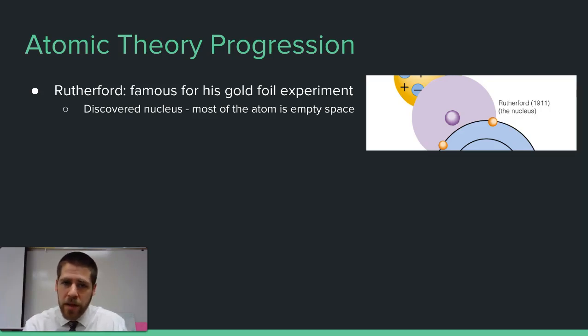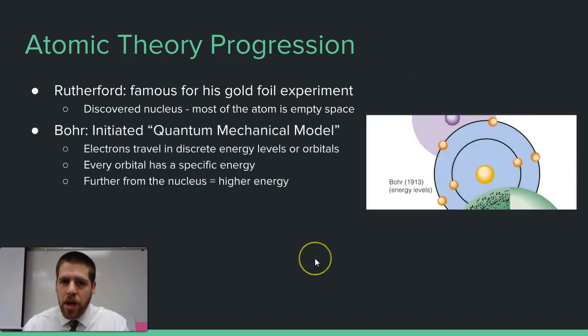He didn't know much about how the electrons worked, so soon after that Bohr came along and said the nucleus is there, but there's also these electrons orbiting the nucleus in very specific orbitals. They don't exist in between these orbitals, they only exist on these orbitals. The further away from the nucleus, the higher the energy. That's a very important point - I would underline or star that because we're going to come back to it.